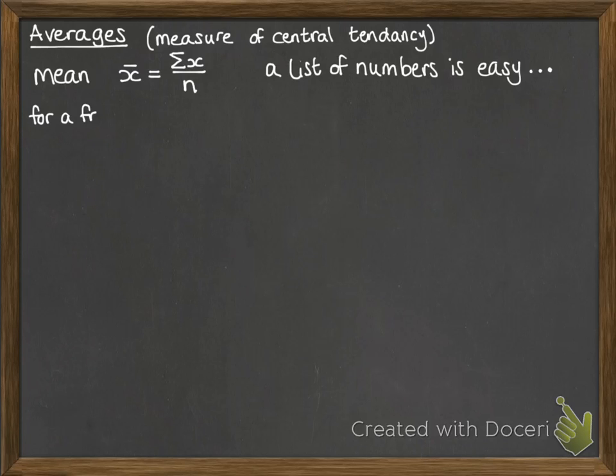We can also do it from a frequency distribution. That means finding the mean from a table of values. In this case, x-bar would be the sum of all the x values times their frequency, divided by the total sum of the frequencies. This is easier to see with an example.